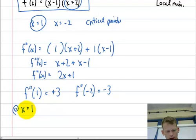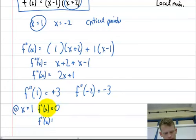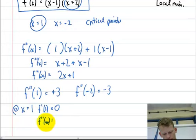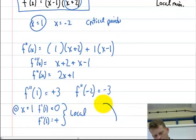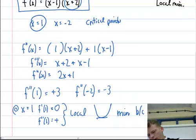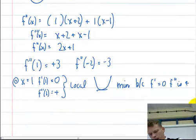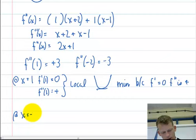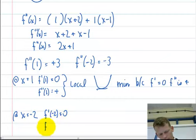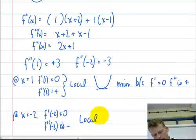At x equals 1: f prime at 1 is 0 and f double prime at 1 is positive, so therefore it is a local min because f prime equals 0 and f double prime is positive. At x equals negative 2: f prime at negative 2 equals 0 and f double prime at negative 2 is negative, so I have a local max.